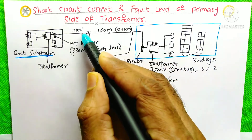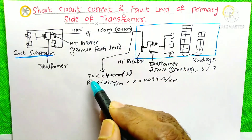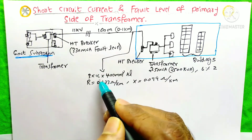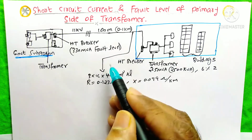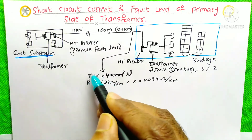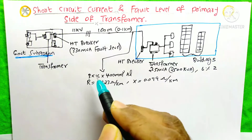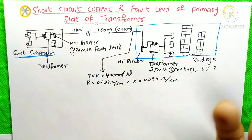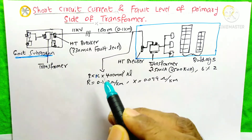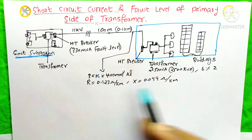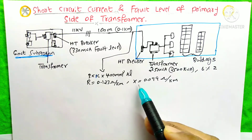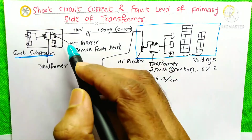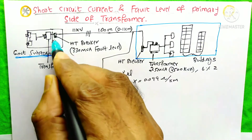This is an 11 KV line. The cable data is 3 × 1-core 400 mm² aluminum cable — meaning one core per phase: R phase, Y phase, and B phase separately, making three cables total. The run is only 1 run in our case. The resistance of this cable is 0.123 Ohm per kilometer and the reactance is 0.099 Ohm per kilometer. Our transformer is connected directly to this HD breaker.